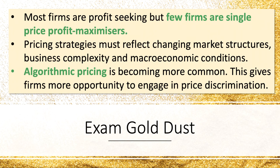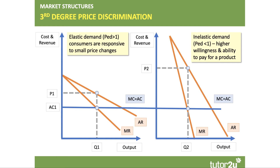Macroeconomic conditions change — recording this in 2021 as we hopefully come out of the pandemic-induced recession. Some businesses are going strong on technology, using algorithms and surge pricing — as engaged by companies such as Deliveroo and Uber. That gives firms more opportunity to engage in price discrimination, so pricing strategies are more complex than we might think.